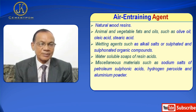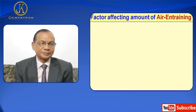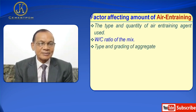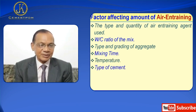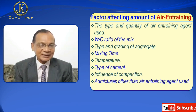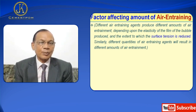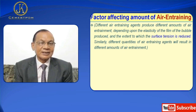The factors affecting the amount of air entrainment include: the type and quantity of air entraining agents used. Different air entraining agents produce different amounts of air depending upon the elasticity of the film of the bubble produced and the extent to which the surface tension is reduced. Similarly, different quantities of air entraining agents will result in different amounts of air.